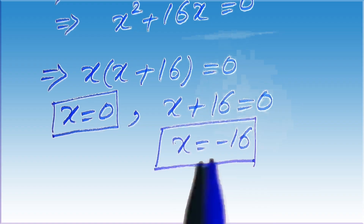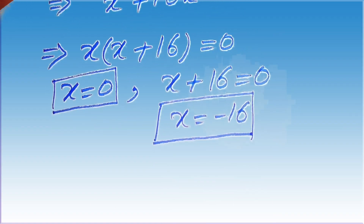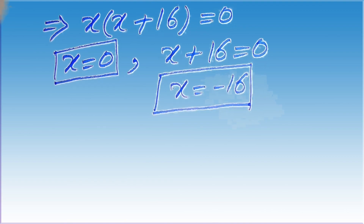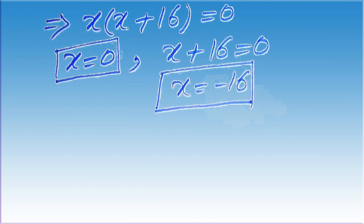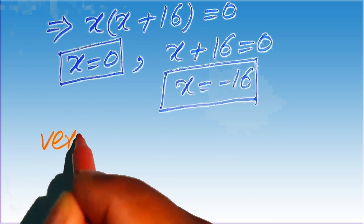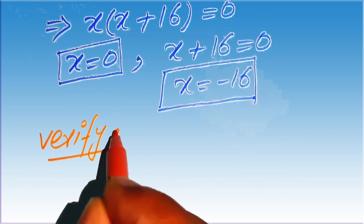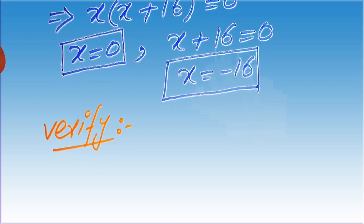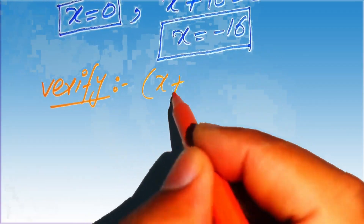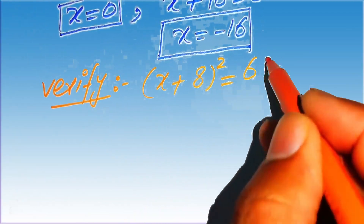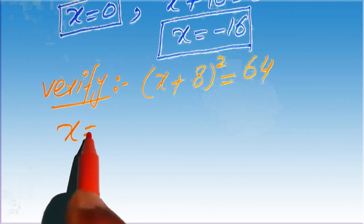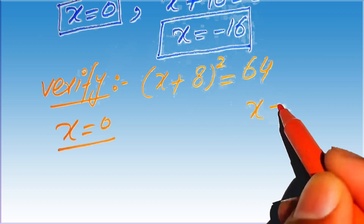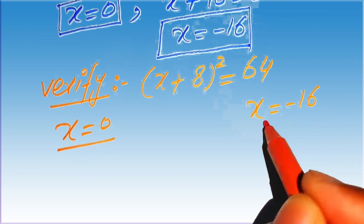This is the final answer. We now verify both values of x by checking whether they satisfy the given equation x plus 8 whole squared equals 64. We substitute x equals 0 and x equals minus 16 one by one.